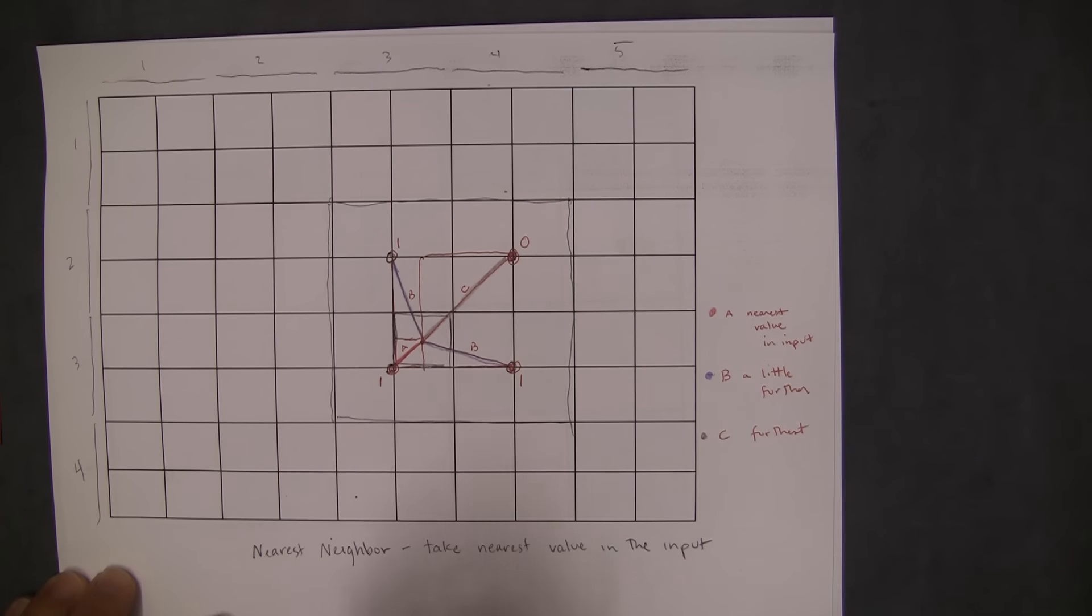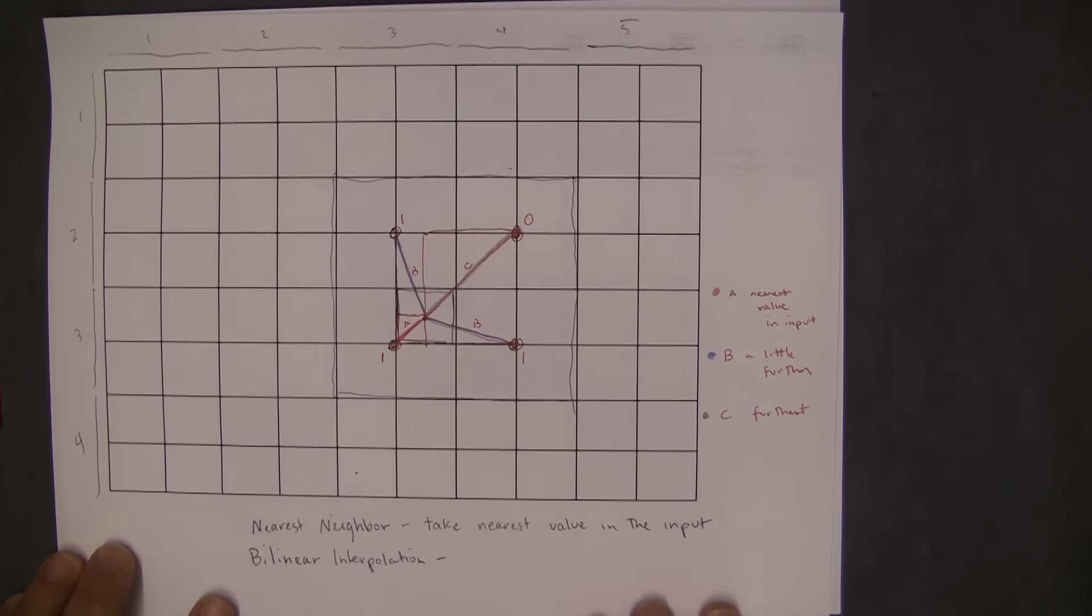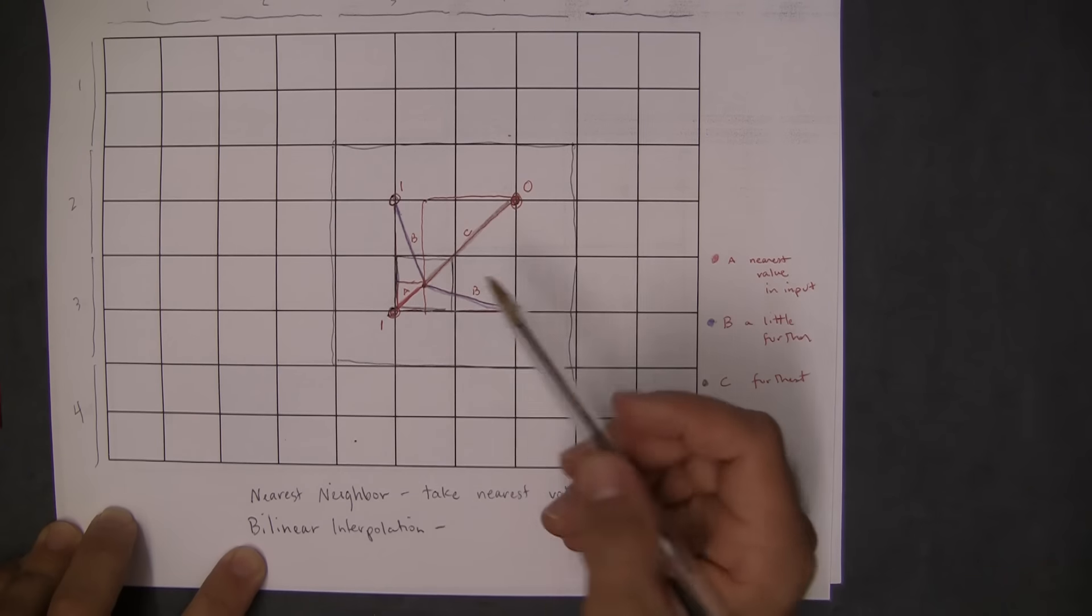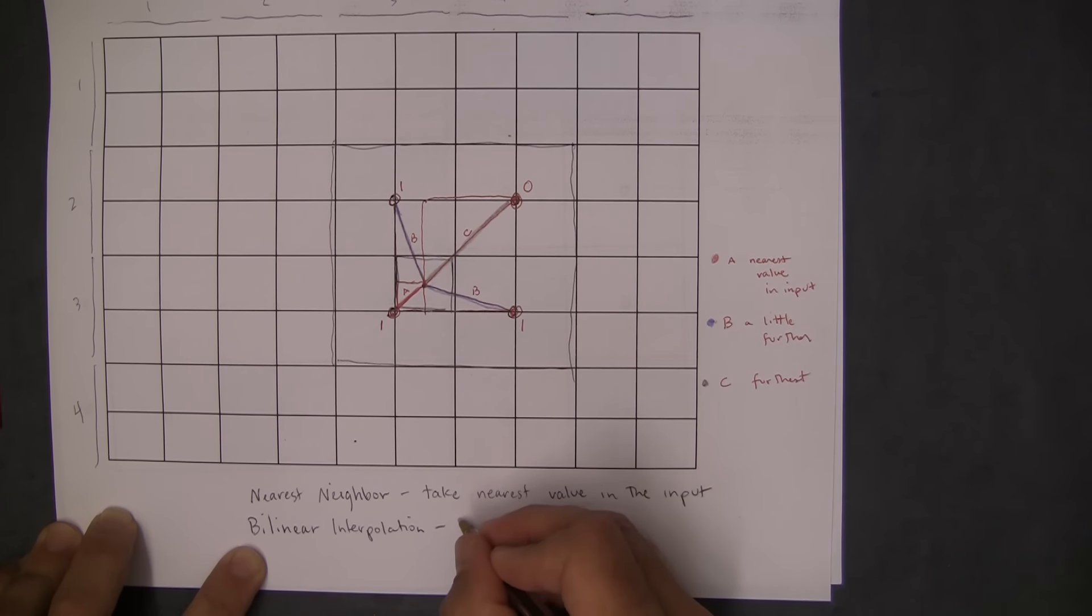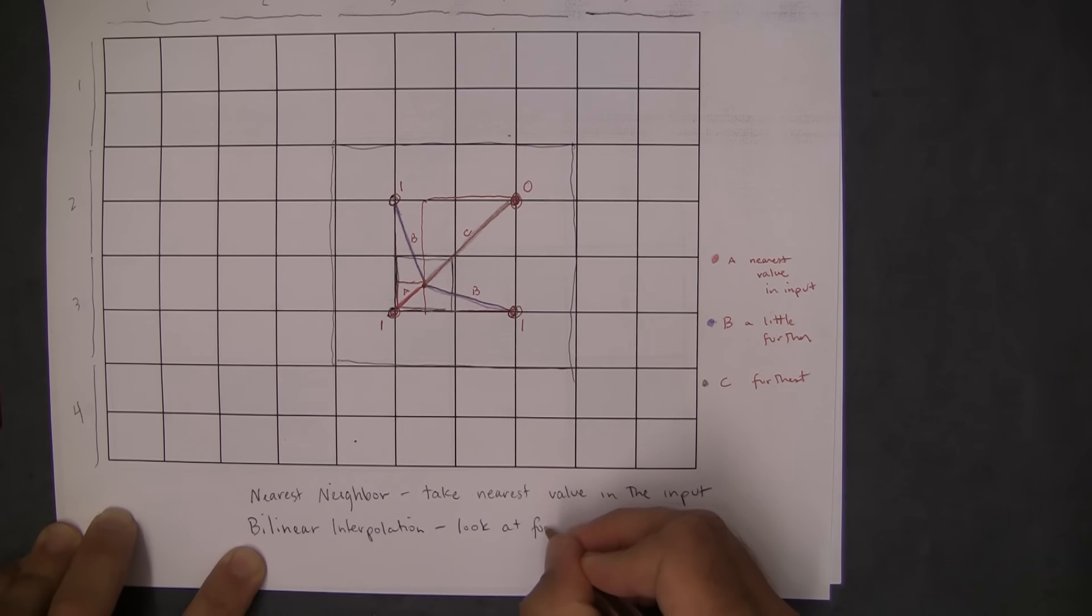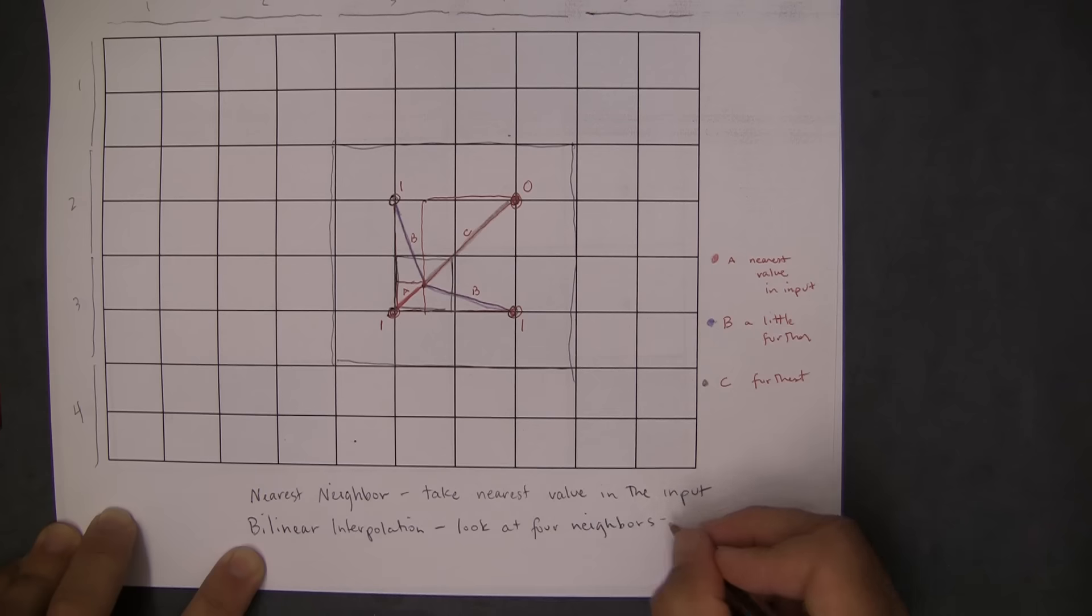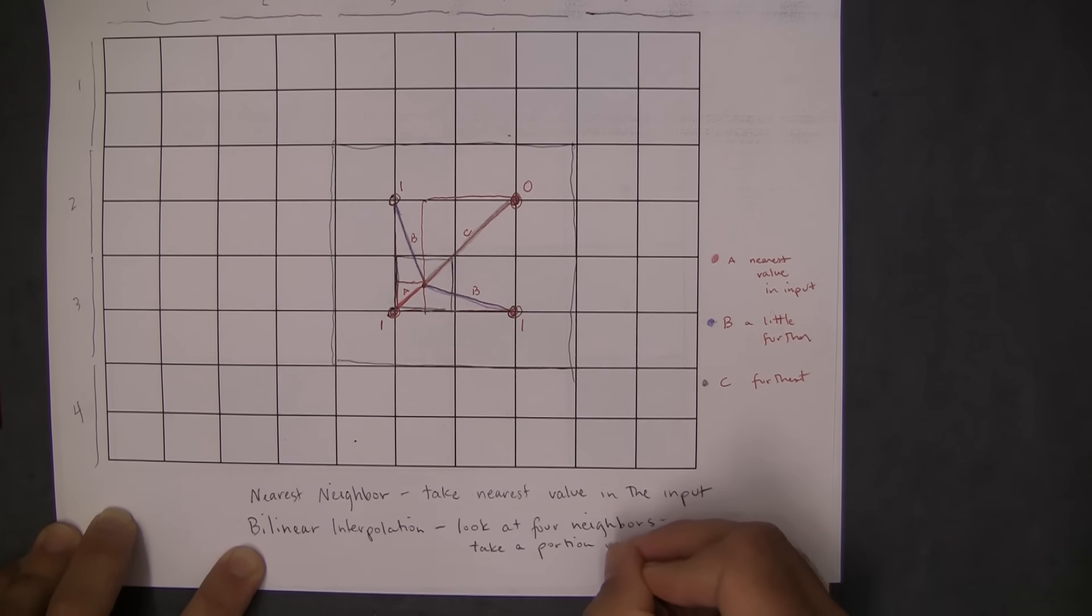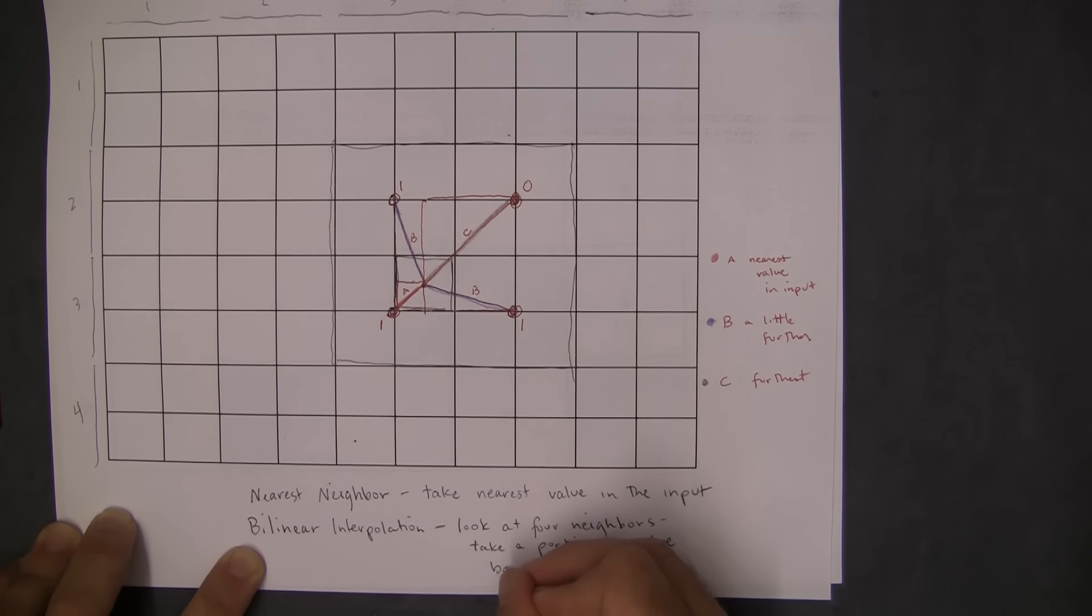The alternative is to use bilinear kind of interpolation, which is basically, if you use this method to kind of come up with a new value for this, the idea is that you're going to look at the four neighbors and basically take a portion of the value based on its distance.